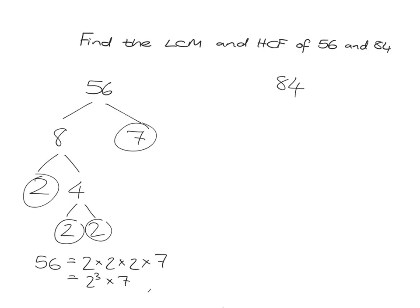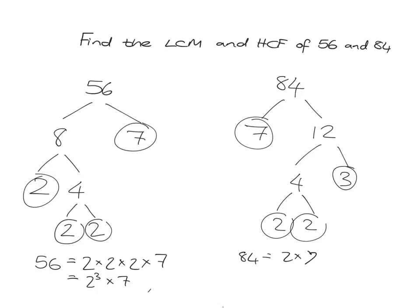Let's see if you got the same answer. 84 is 7 times 12, and 12 is 4 times 3, and 4 is 2 times 2. So you might have done it a different way, but you should have got the answer: 84 is 2 times 2 times 3 times 7, which is 2² times 3 times 7.